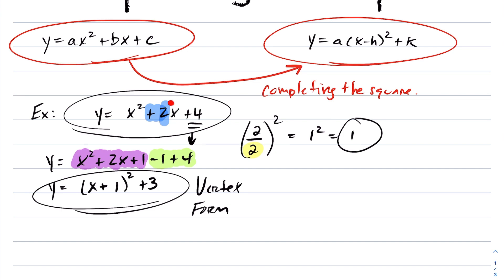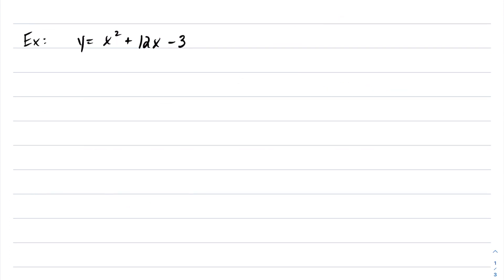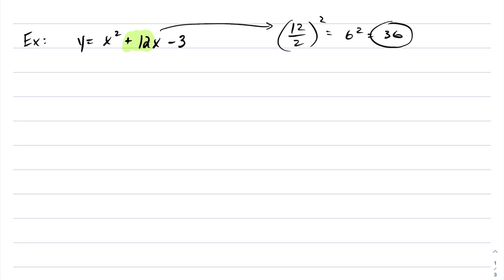So we went from standard form to vertex form by using completing the square. Again, it starts with identifying your b value, dividing by 2, and squaring it. Let's take a look at our next example. I have a quadratic in standard form and I want to put it in vertex form. The b value here is 12. You take your b value, divide it by 2, and square it, in which case we get 6 squared, which is 36.